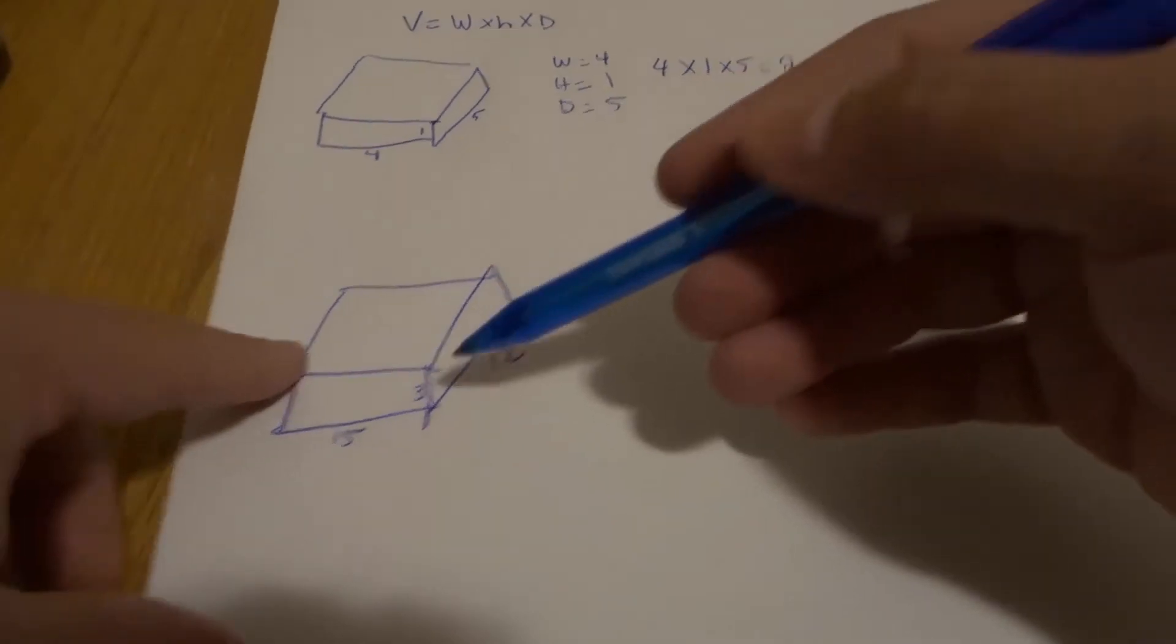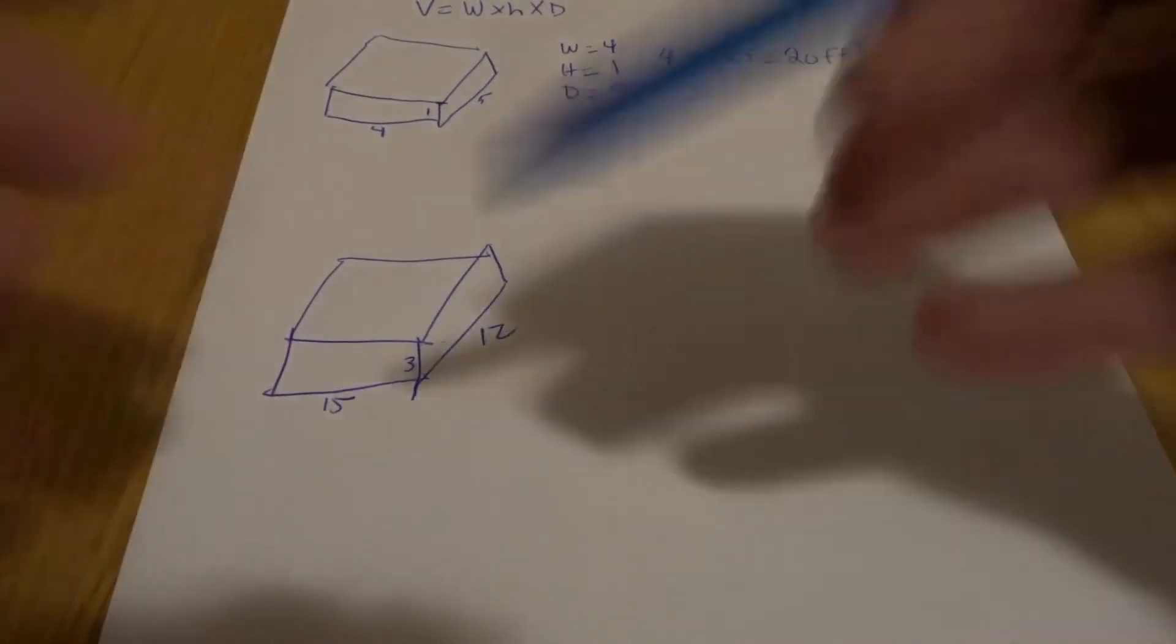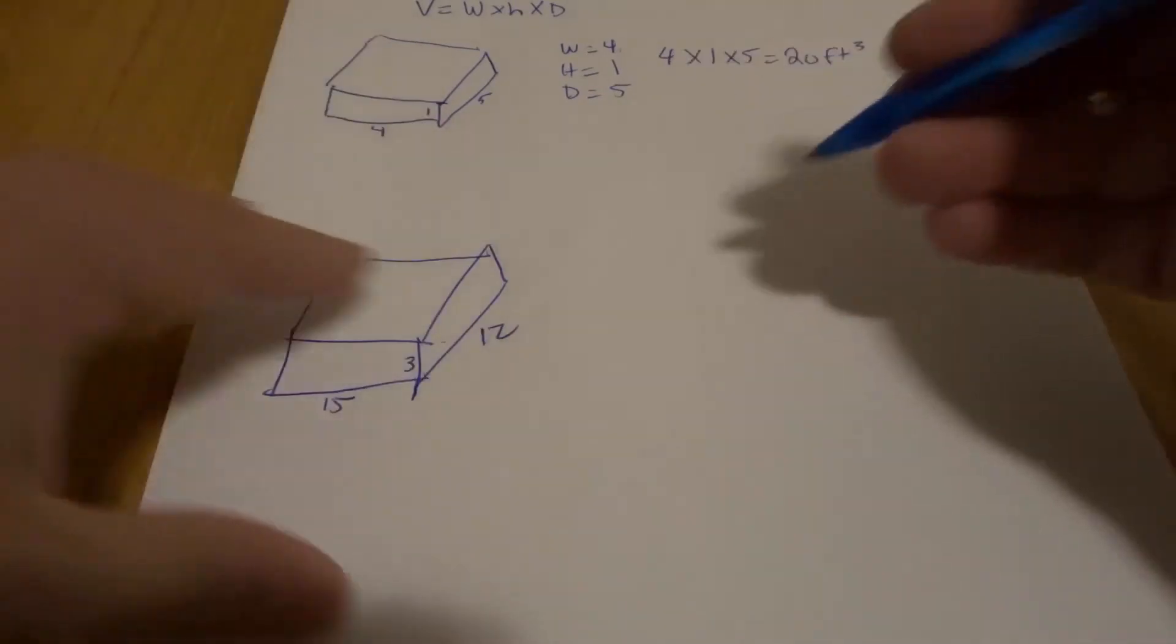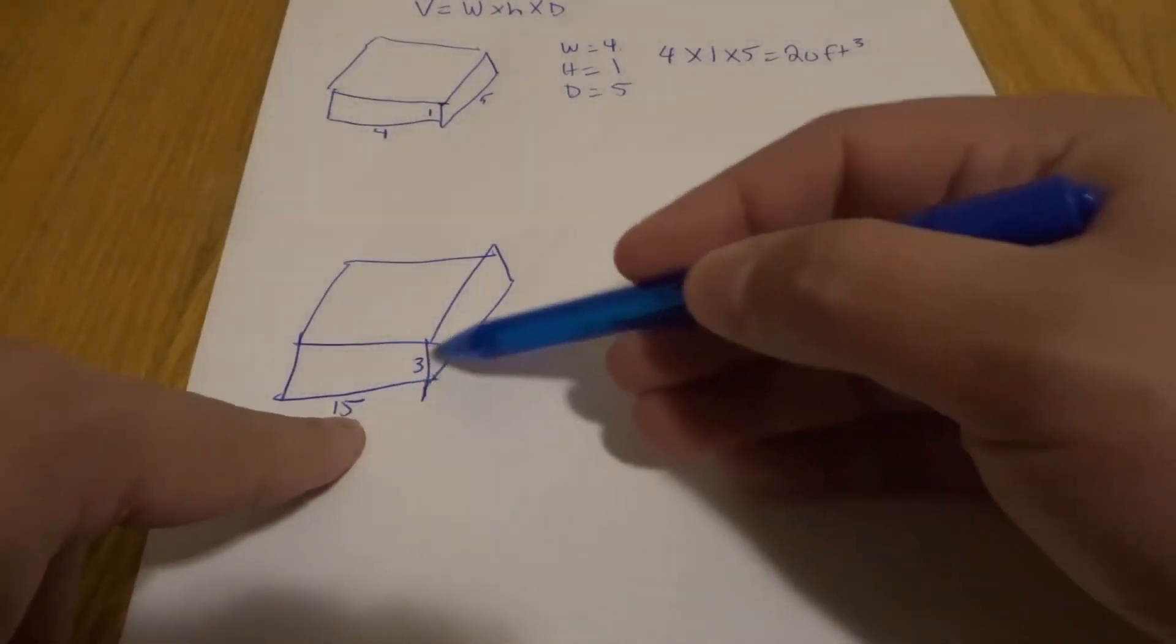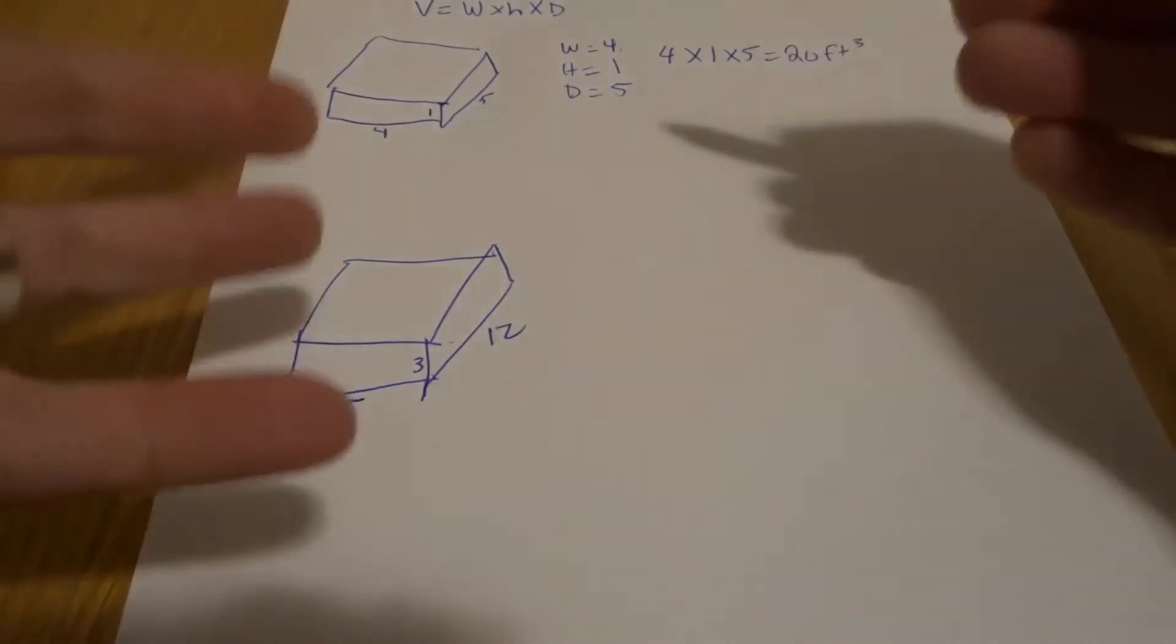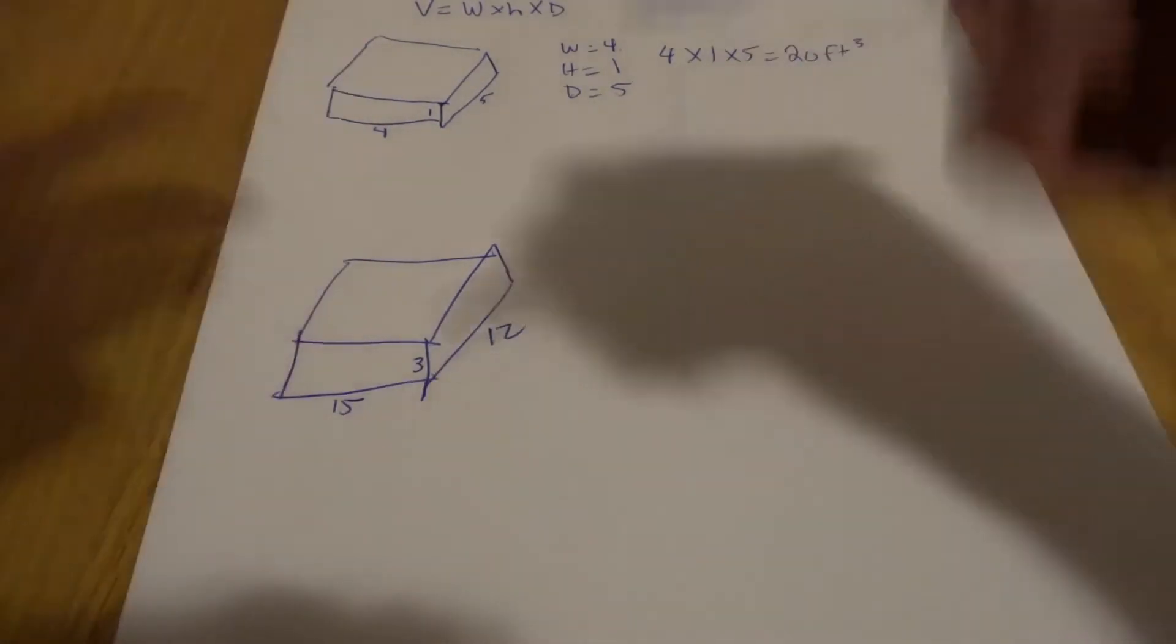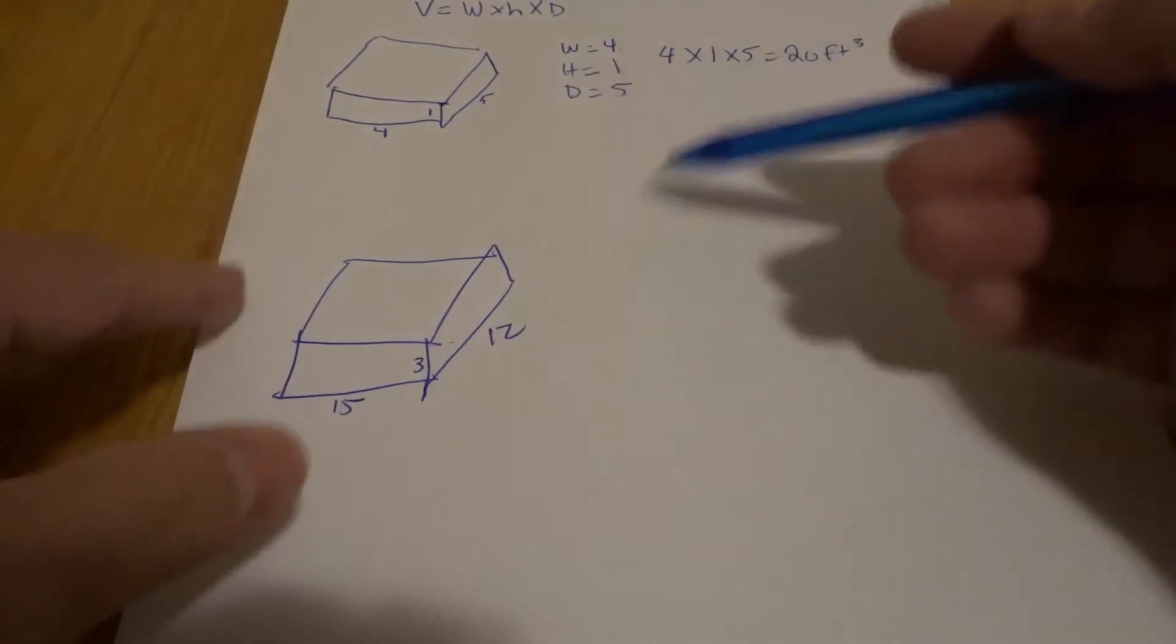Now if your dimensions are in inches or centimeters or anything else, you're going to have to convert them to feet. So what I have here are dimensions that I've considered to be in inches. We're going to take each of these dimensions and convert them into feet, and then we can multiply them together.